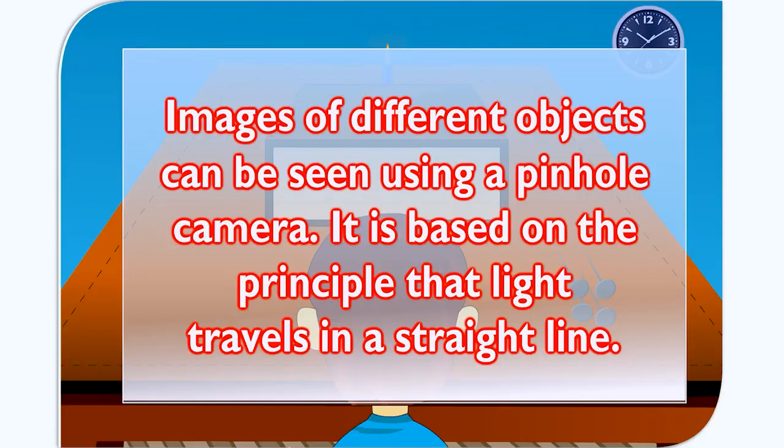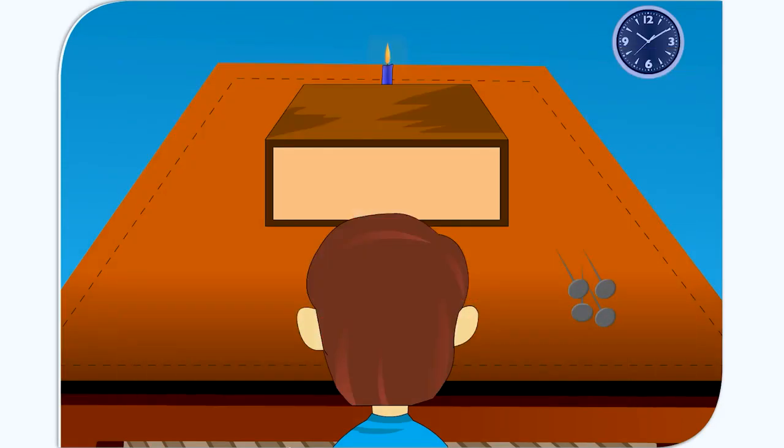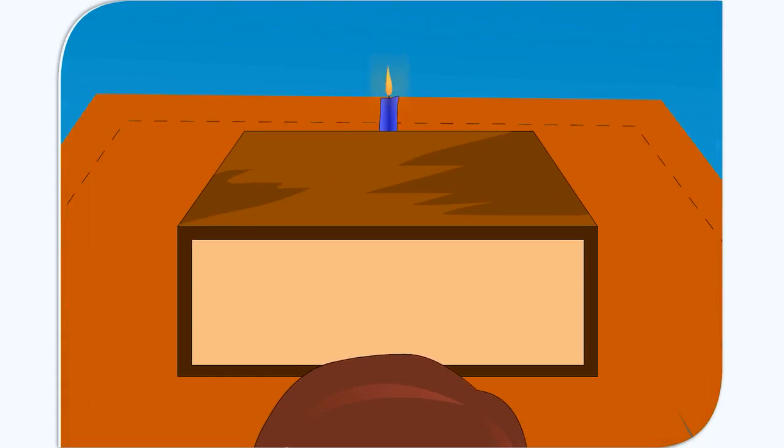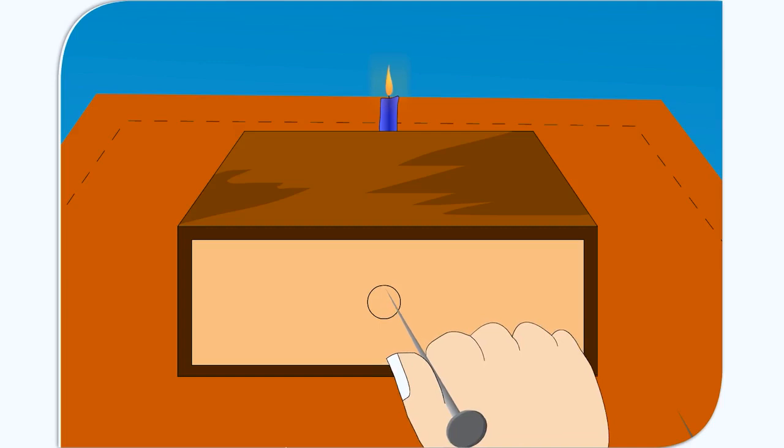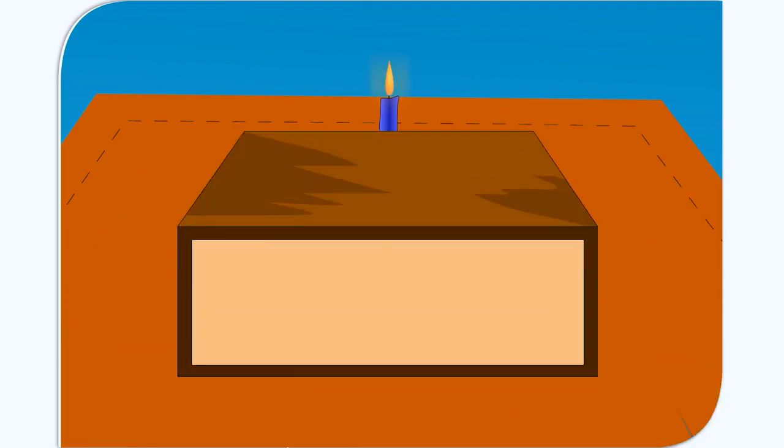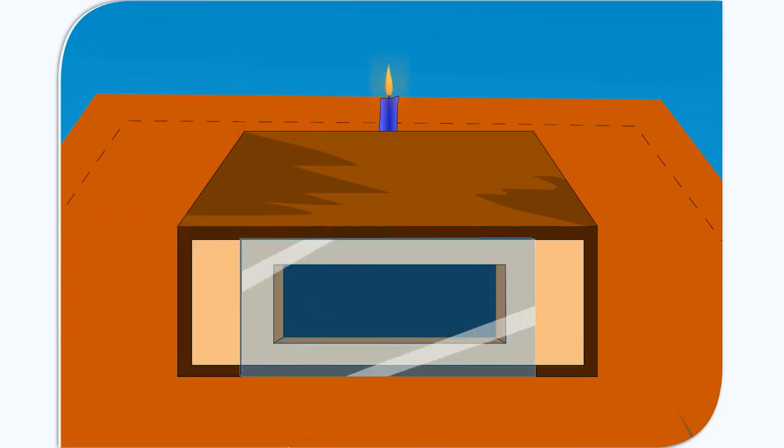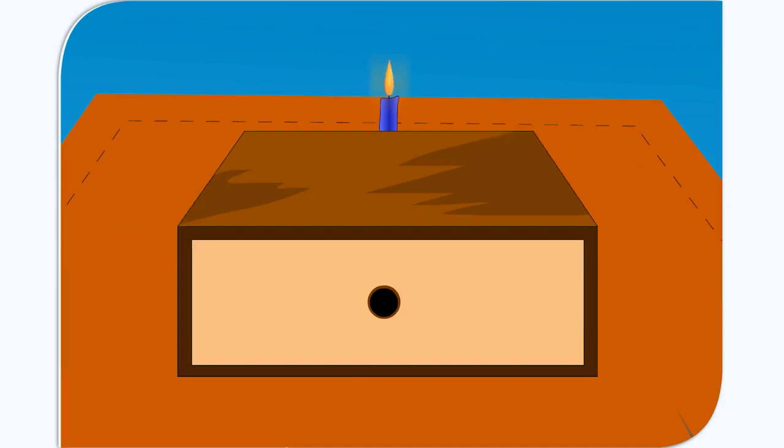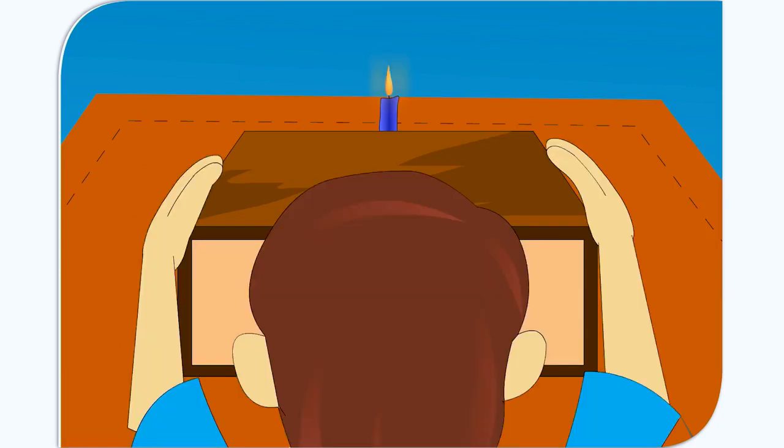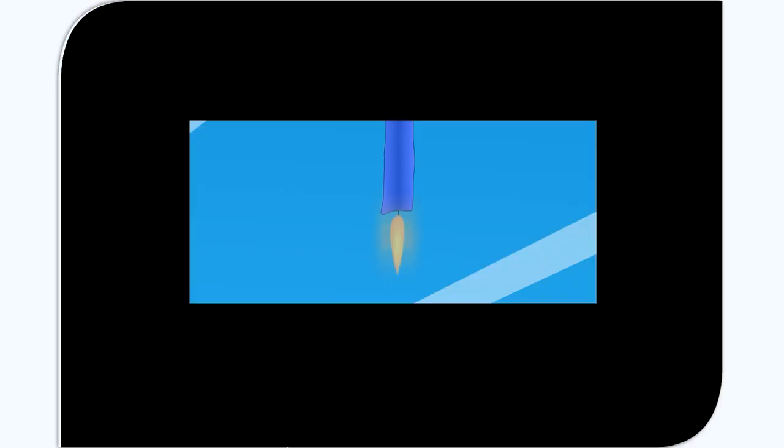Images of different objects can be seen using a pinhole camera. It is based on the principle that light travels in a straight line. Take a medium-sized cardboard box and blacken the inside of the box with black paint. Make a tiny hole, a pinhole on one side of the cardboard box using a pin. Cut out a rectangular portion of the side of the cardboard box opposite to the one on which the pinhole was made. Cover this part with butter paper or grounded glass. They will act as a screen. The pinhole camera is ready. Place a candle on a table and light it. Place the pinhole camera a few inches away from the lighted candle with the side having the pinhole facing the candle. Move the pinhole camera forward and backward till you get a clear image of the candle flame on the screen. The image formed will be colored and inverted. This is because light travels in a straight line.